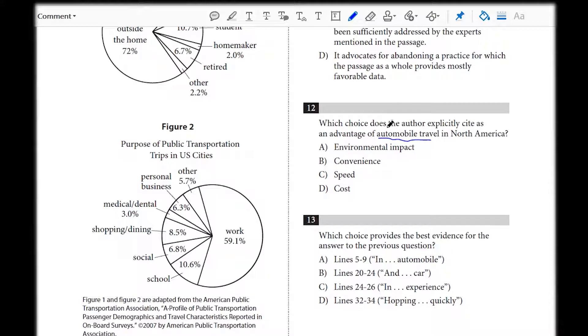Now, there's three ways we can approach a question like this. First of all, we can happen to get lucky and have annotated it correctly. So we know exactly where the author said a benefit of automobile travel.